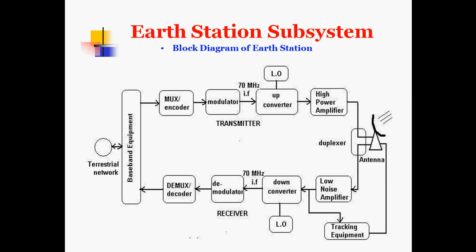From the terrestrial network, a signal is received by the baseband equipment and then given to the transmitter subsystem. The transmit subsystem includes a MUX encoder, error coding techniques, and a modulator that modulates the signal to an intermediate frequency. This is then given to an up-converter connected to a local oscillator, which converts the intermediate frequency to a high uplink frequency.